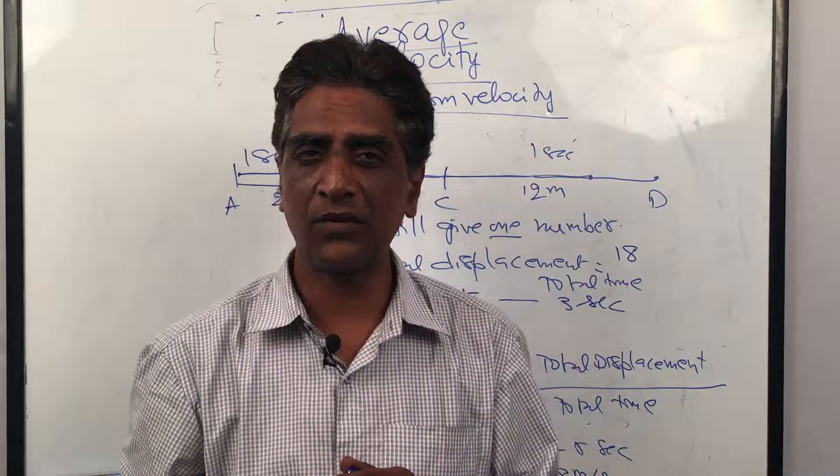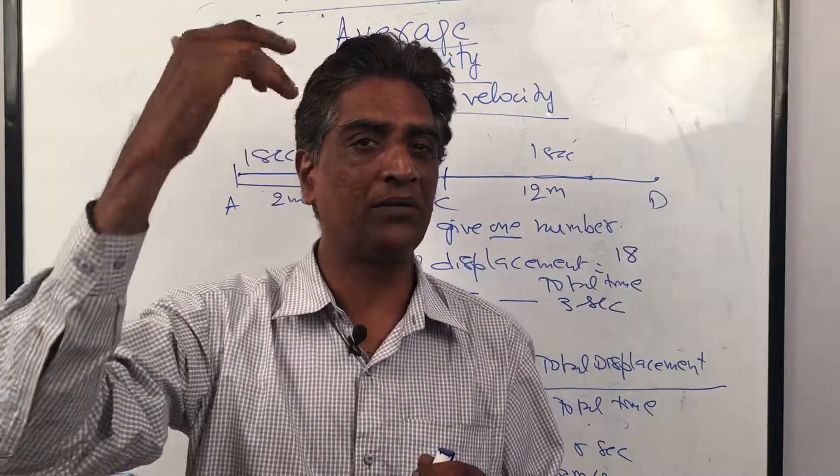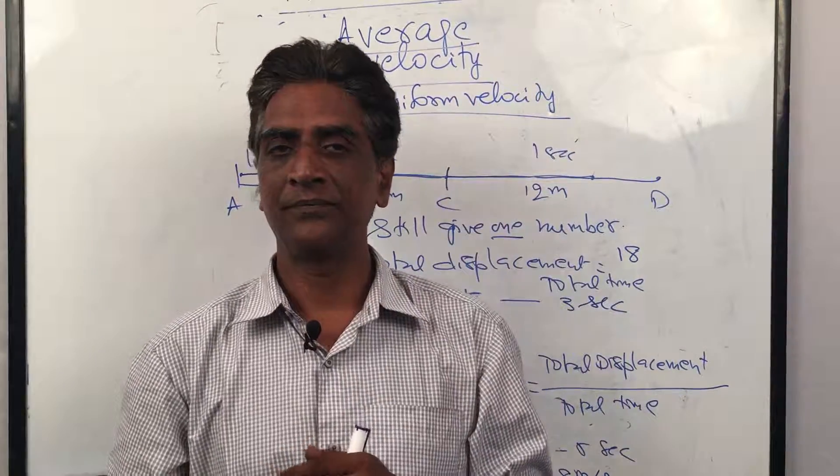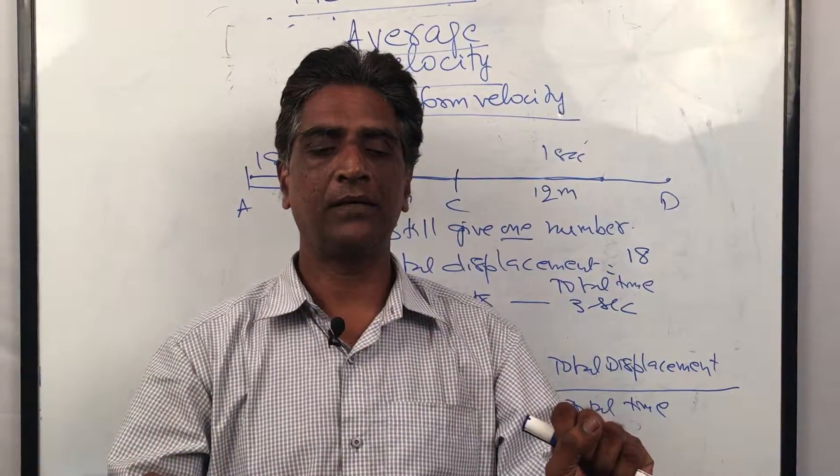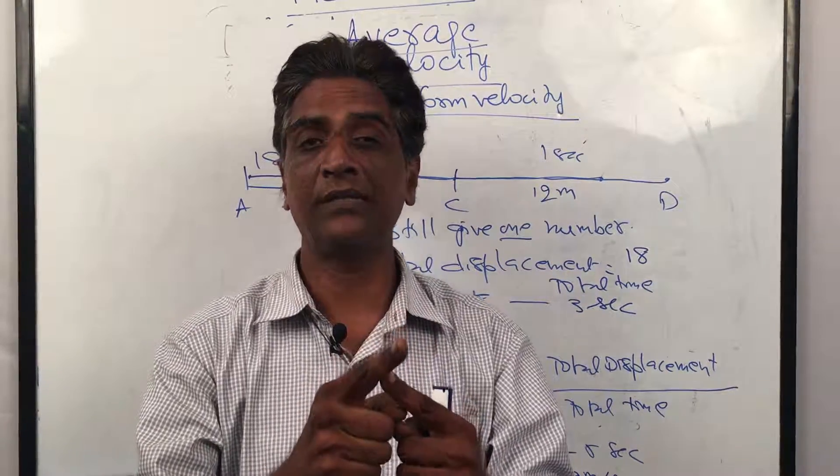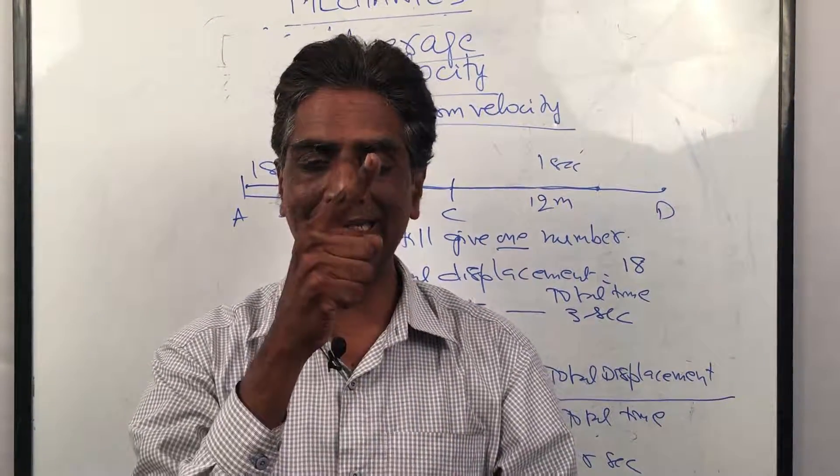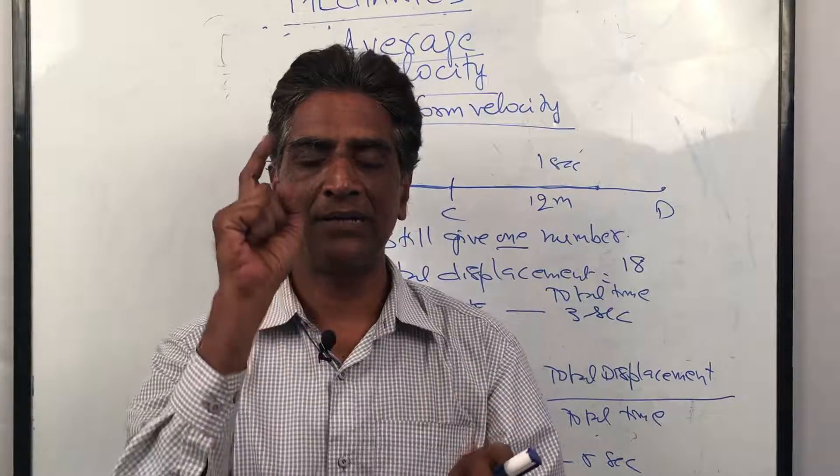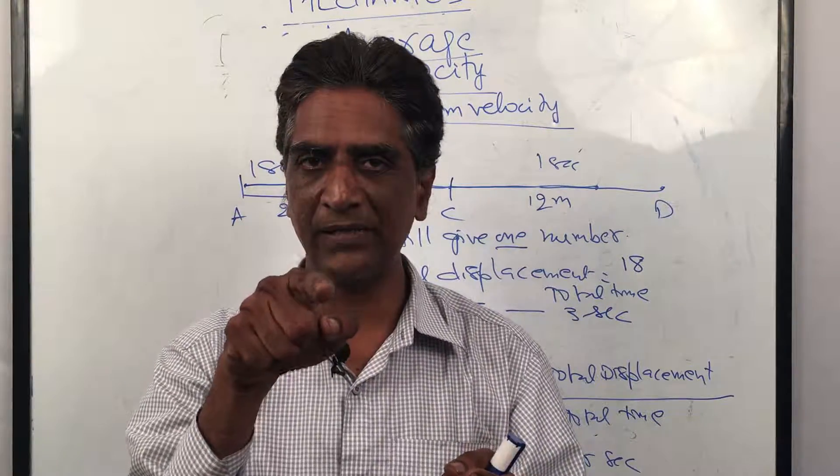Now we come to the third very interesting concept which you'll learn very deeply later on: instantaneous velocity. So I'm going on a bike and I just look at my speedometer. I can see it showing, let's say, 30 kilometers per hour.